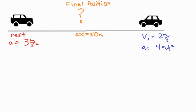In this video we're going to be taking a look at two cars that are approaching each other while they are both accelerating. The first one starts at rest with an acceleration of three meters per second squared, and the second starts at a velocity of two meters per second with an acceleration of four meters per second squared. Their separation distance is 50 meters. We're going to find the time it takes them to meet and also what their final position is.